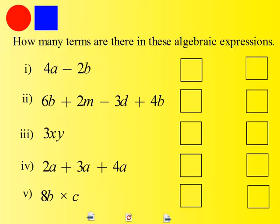So in this case, we have 4a minus 2b, and so we have two terms separated by this minus sign. So here, the answer should have been 2.